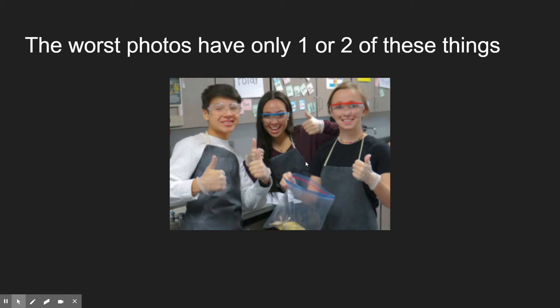The worst photos have only one or two of these things. This one has faces and we're in close, but there's no real action — they're just holding their thumbs up. There's some emotion — they're smiling — but what are you going to write a caption about? 'So-and-so holds their thumbs up and smiles.' They're not doing anything. These are the worst kind of photos. Posed photos where they're looking at the camera have no business being in the yearbook. Do not use them.